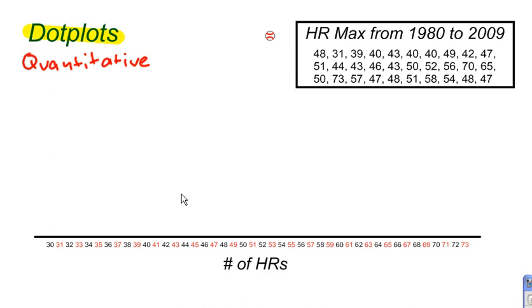With dot plots, you basically are going to make a number line and put a dot where each of your data values comes up.